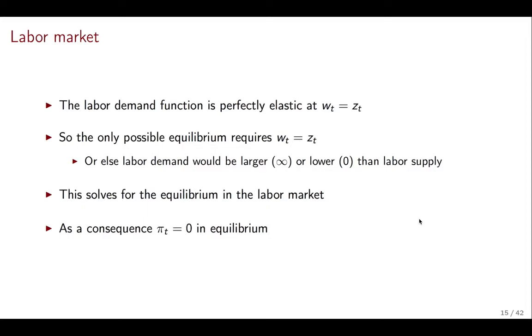The first one is the labor market and this we've seen before in class. So we know that the demand is perfectly elastic at WT equals ZT and so that means that WT equals ZT is actually the only possible equilibrium. At any other wage, demand will be infinity or zero and it wouldn't possibly match labor supply. So now we know what wages have to be. Now, since we know wages, this solves for the equilibrium in the labor market in terms of the price. We still don't know the quantities. That's going to be actually the last thing we find. But we've solved for the problem of finding the equilibrium price of this market. It also solves for profits, which we now know are equal to zero in equilibrium.